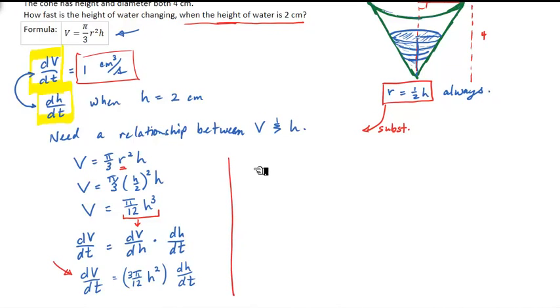So let's just continue over here. When h equals 2, dV by dt will be equal to 3π on 12 times 2 squared times dH by dt. We also know that the value of dV by dt is 1, so let's put the 1 in. So 1 is equal to, let's just simplify this stuff on the right-hand side. We have 2 squared, which is 4. 4 times 3 is 12. The 12 and the 12 on the bottom cancel, so we're left with just π times dH by dt.